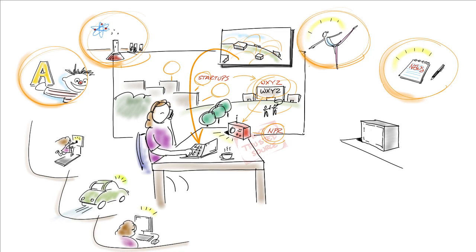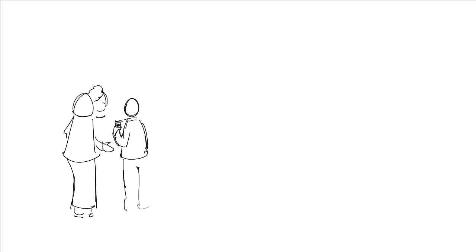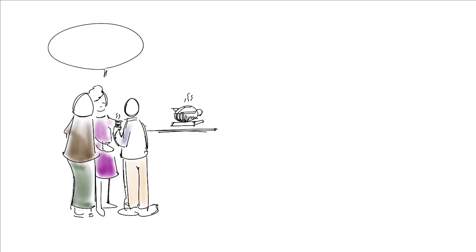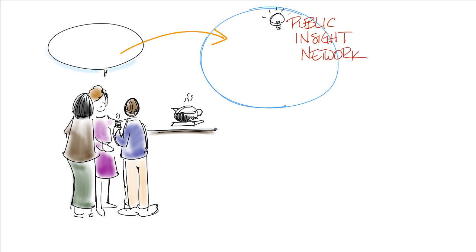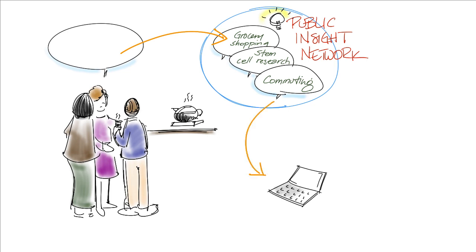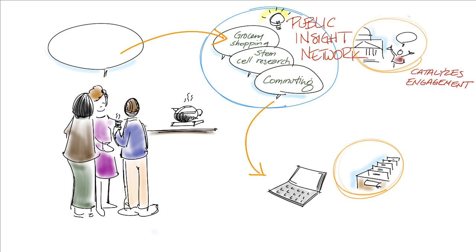Jenna trusts public media because of the producers' efforts to be fair and accurate. Jenna often shares stories with friends. Sometimes she's even a source for stories that deal with things she knows about. The Public Insight Network coordinates input from citizen experts to deepen reporting. So far, Jenna has contributed information about grocery shopping in the recession, her experience as a biologist with stem cell research, and commuting challenges. In other words, public media can catalyze and curate amateur content so that it's most useful to others.